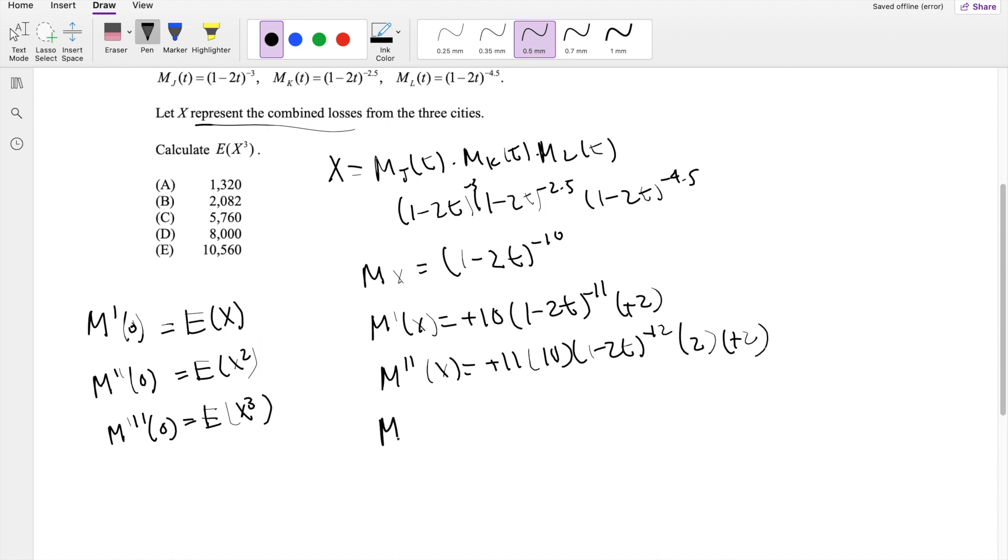And lastly, the third derivative here is going to be equal to -12 times 11 times 10, (1-2t)^(-13). 2 times 2 is already 4 here. 2 times 2, but then we have the third chain here, so that's going to be 2^3. Simplifying this down a little bit, 12 times 11 is 132, so 132 times 10 is going to be 1320.